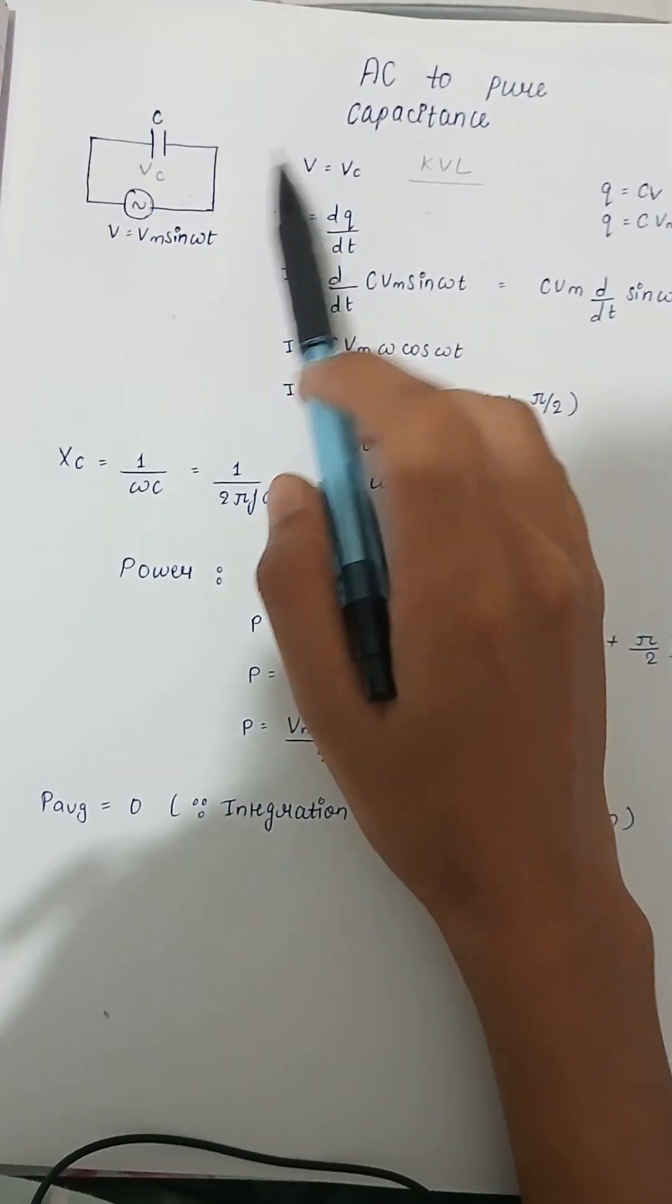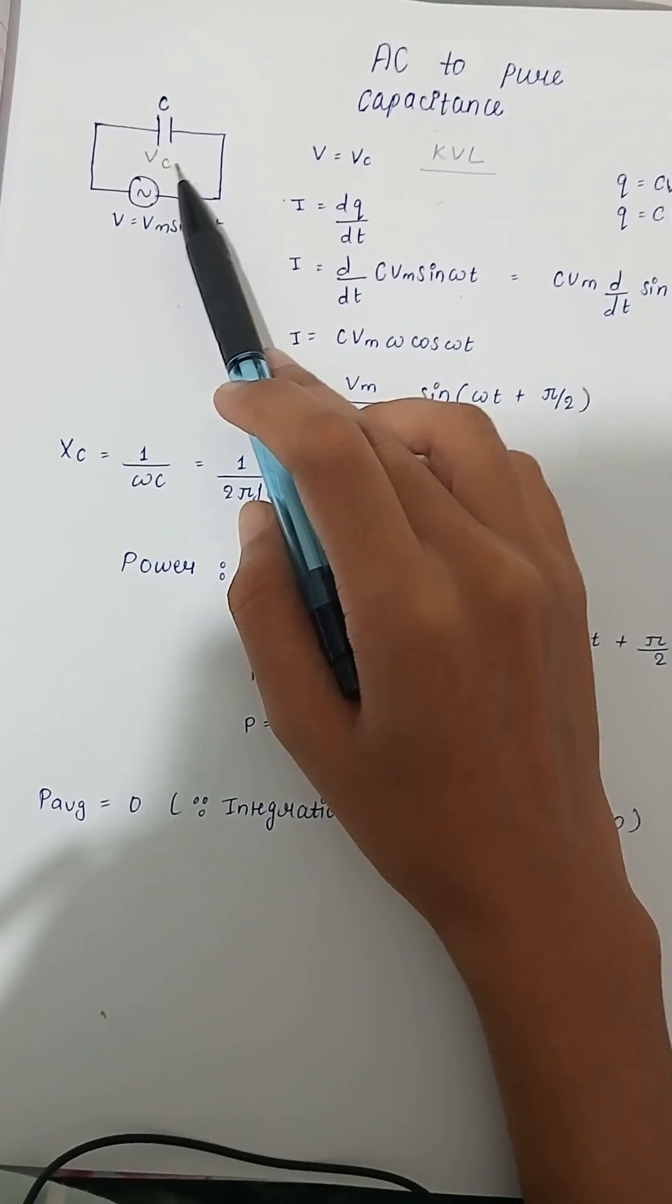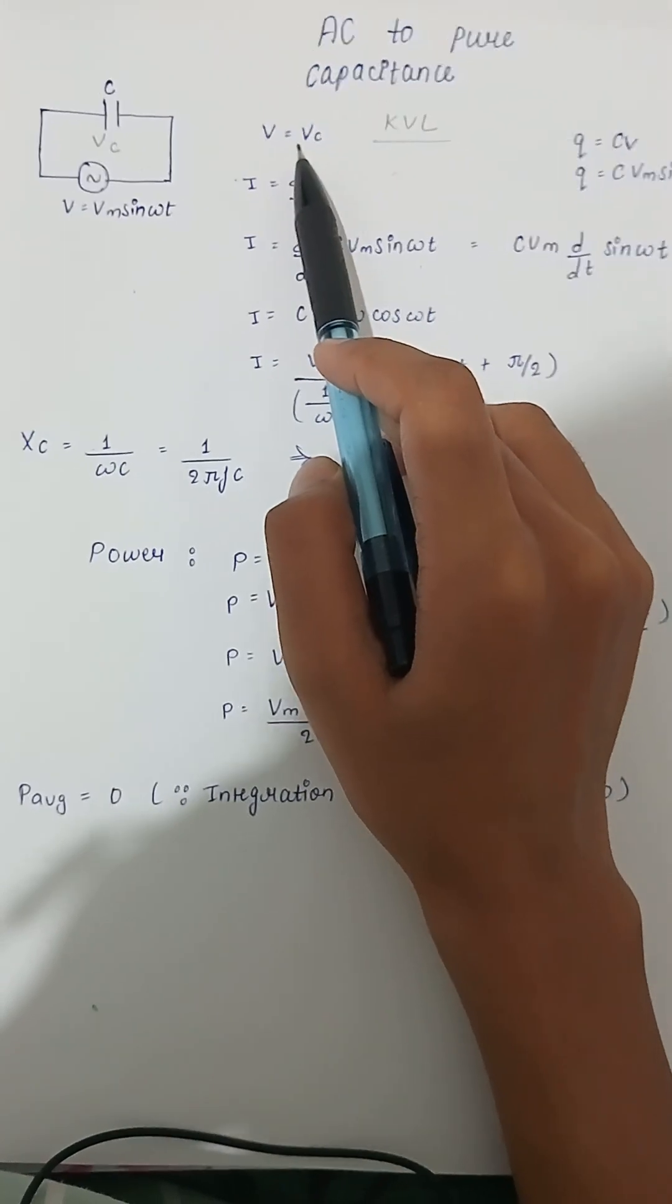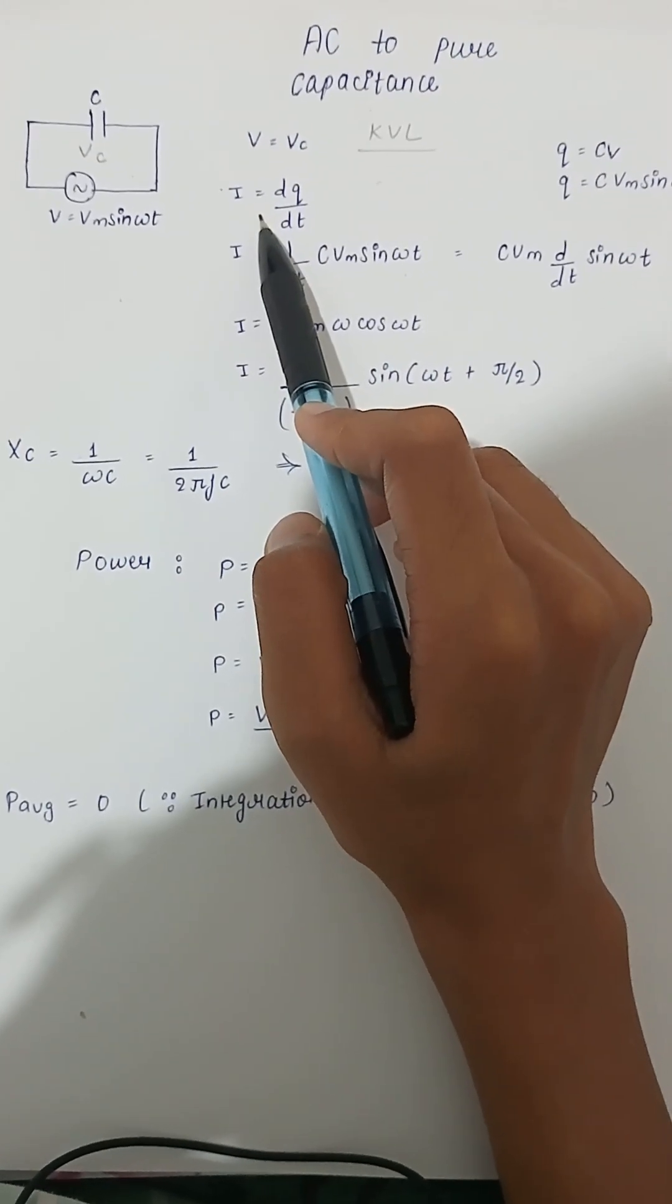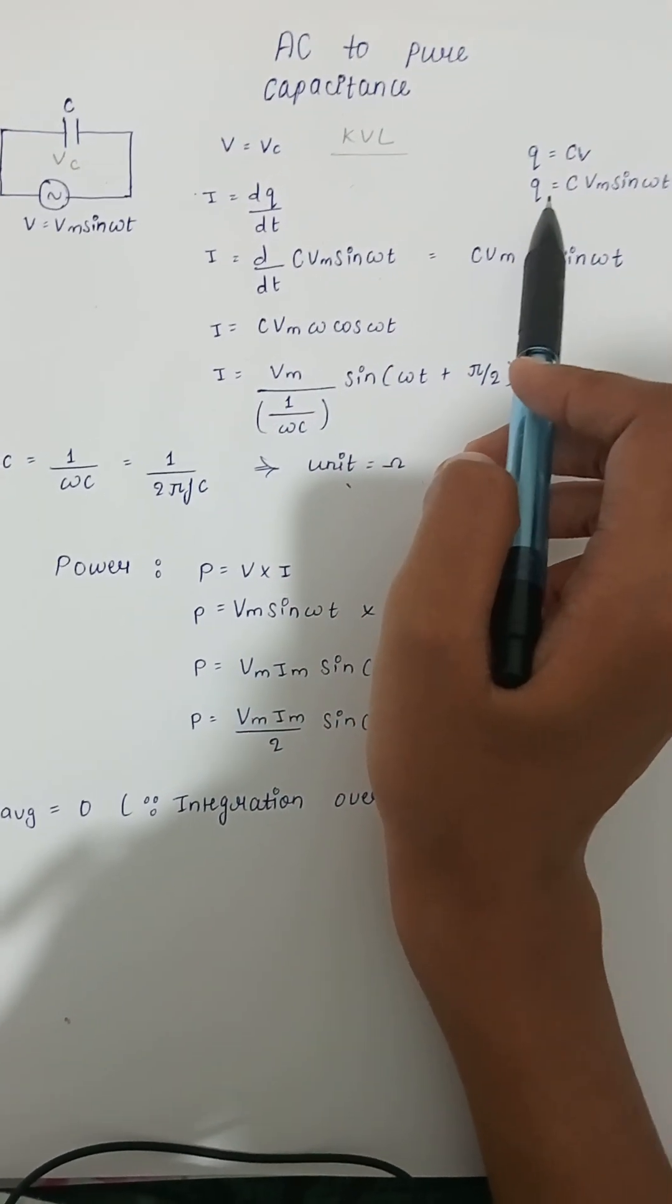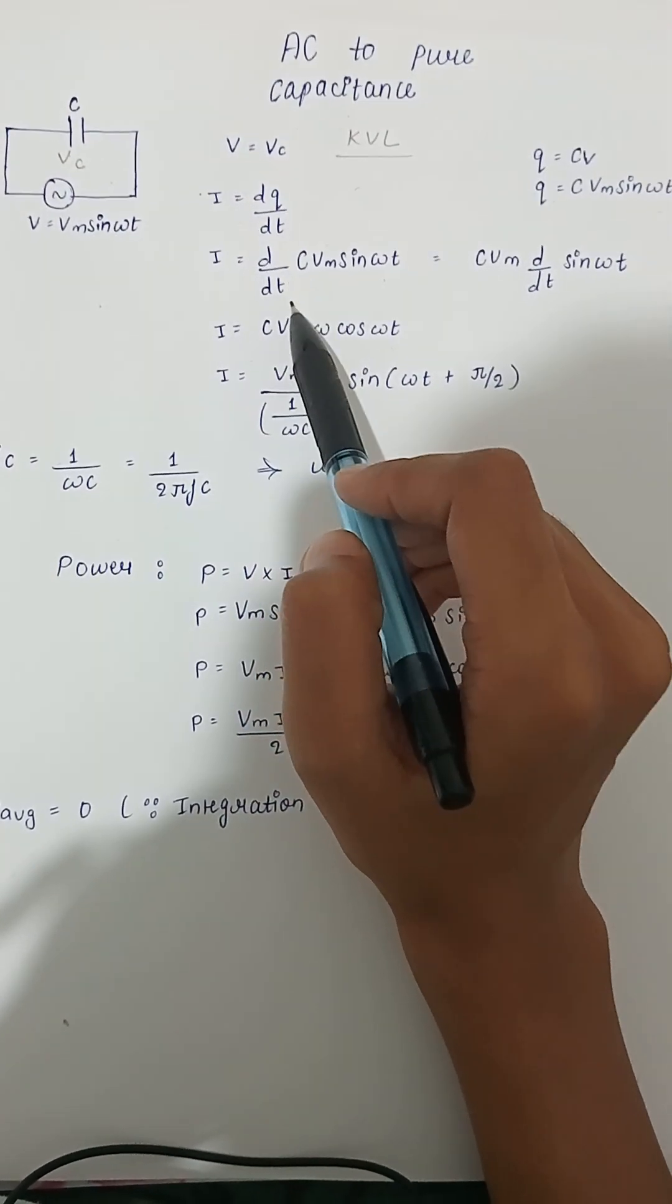AC to pure capacitor. Current is flowing, voltage over here is VC, V equals VC. Now I is equals to dq by dt. What is q? q is equals to CV, so I is equals to d by dt.